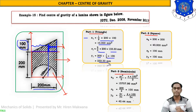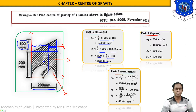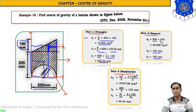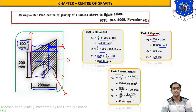For part two, the rectangle: its CG is at the midpoint — 100 mm from the left and 100 mm from the bottom, since height and width are both 200 mm. So x2 = 100 mm and y2 = 100 mm. Area = 200 × 200 = 40,000 mm².